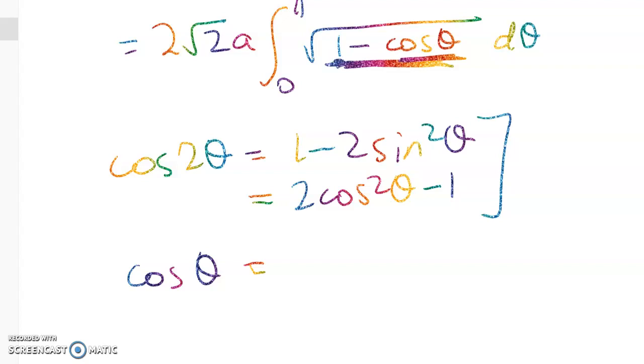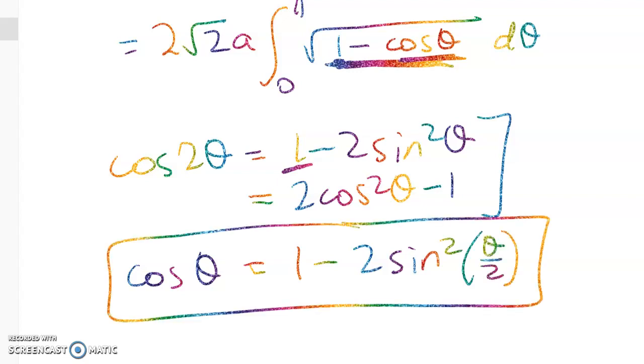I'm going to want the one that gives me 1 here that I can subtract. So cos θ is equal to 1 - 2sin²(θ/2). So let's now make that substitution.